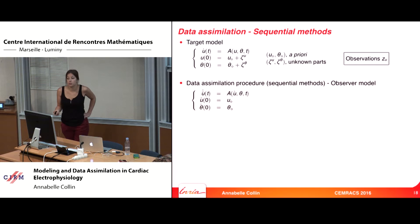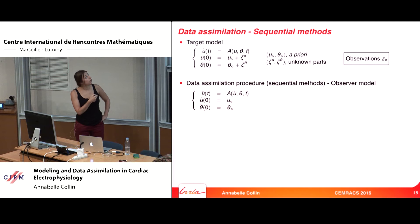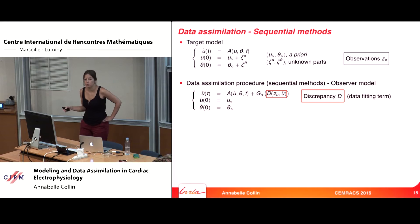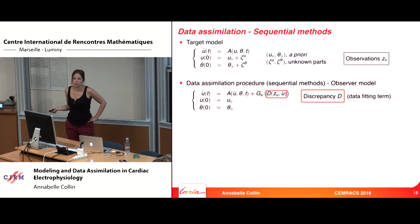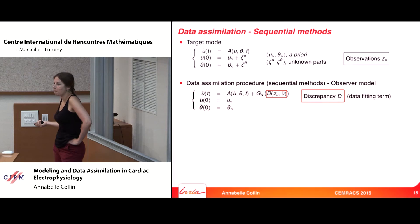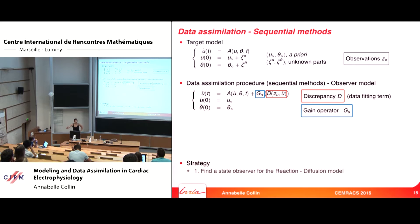You have some observations. In our case, we do not know the full solution of the electrophysiological model, but we know where the front is at different times. We want to use these observations to correct the model. The idea consists in adding a gain term, where D is a discrepancy — the comparison between the observation and the solution of the observer model. In our case this is complicated because observations are the front positions while U is the solution of a reaction-diffusion model.